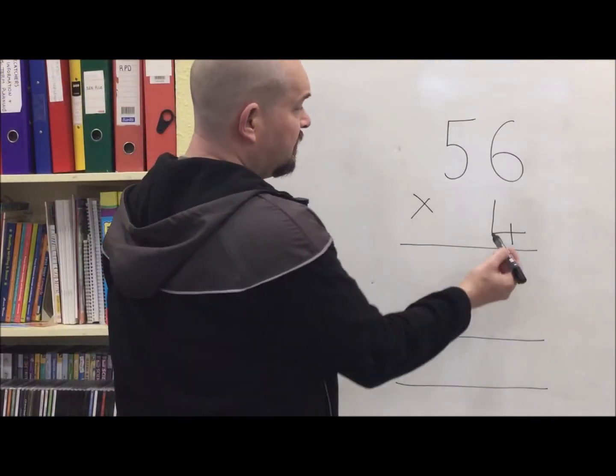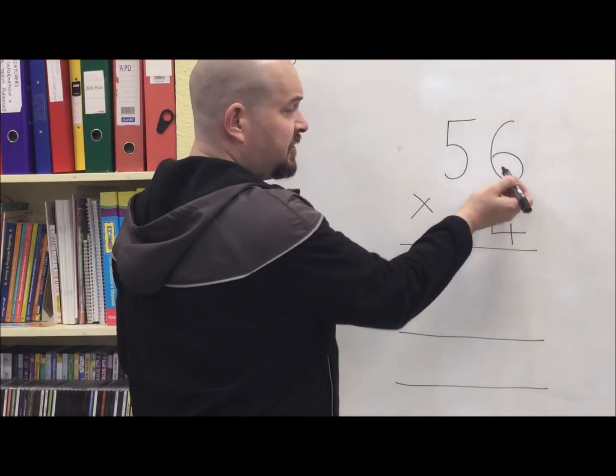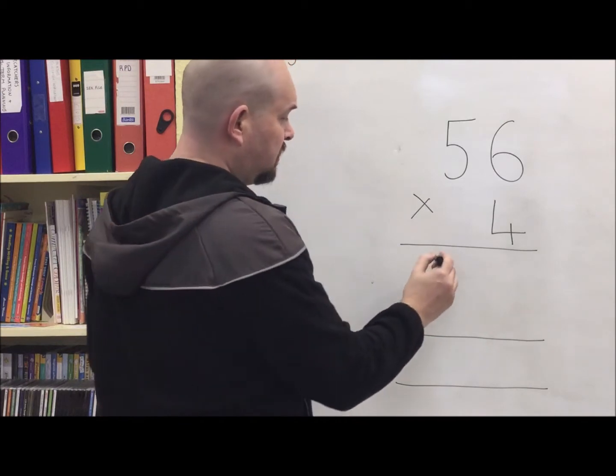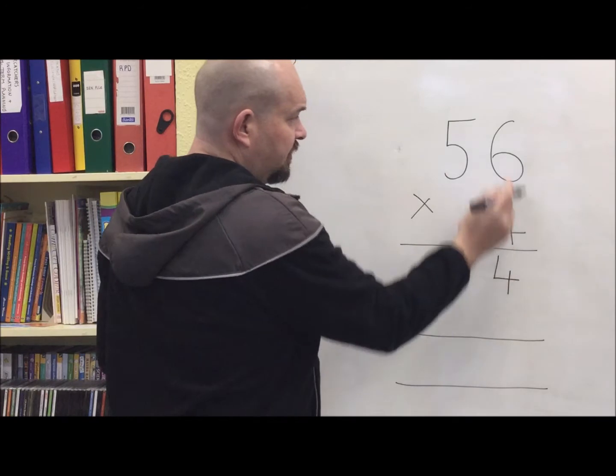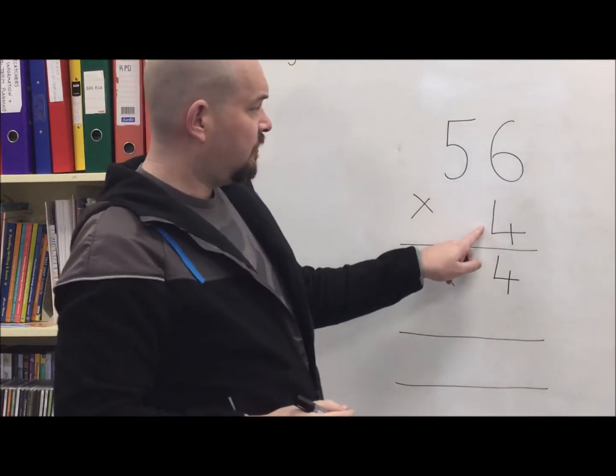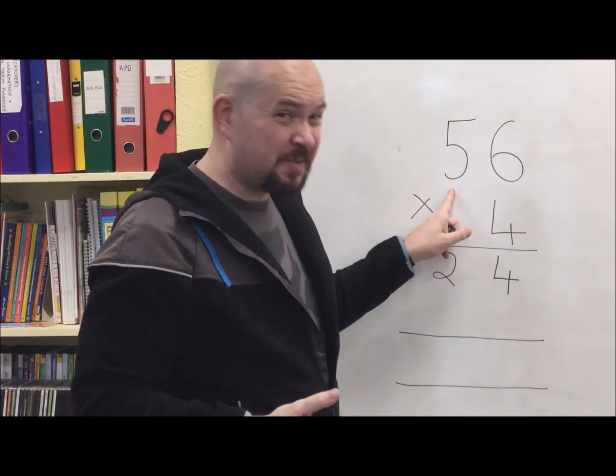Another example, slightly bigger numbers this time. 4 times 6, I know that's 24. Tens lined up with tens. Units lined up with units. 4 times 5, 4 times 50.